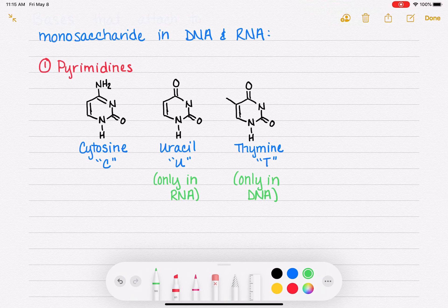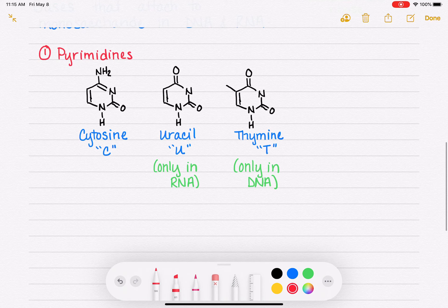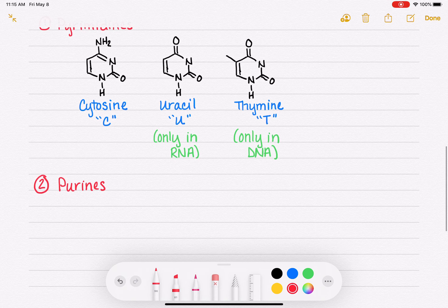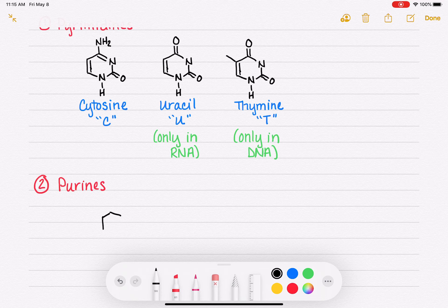So those are three bases that are classified as pyrimidines. The other two bases are classified as purines. They have different structures. They have bigger rings.